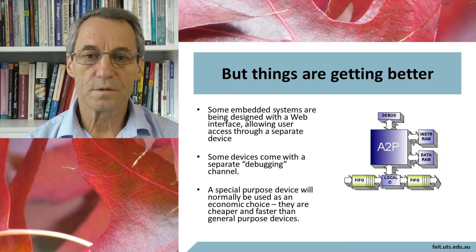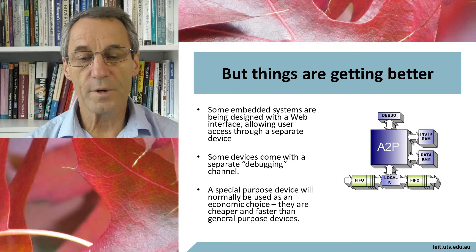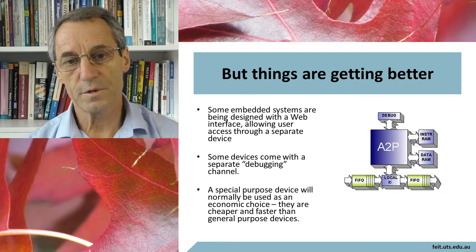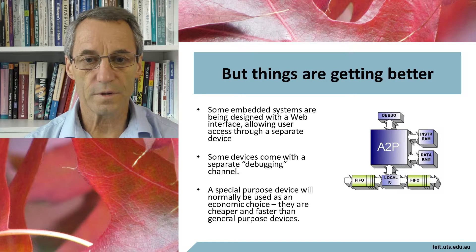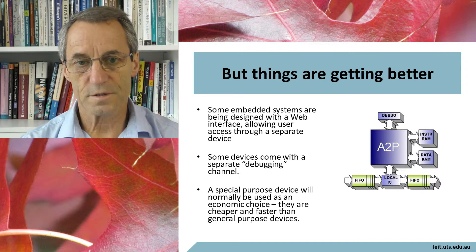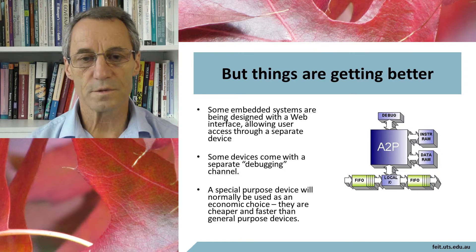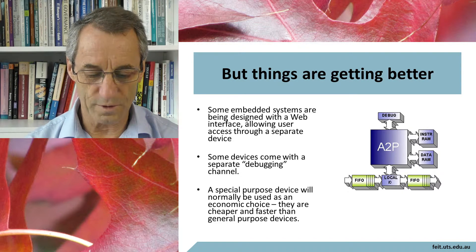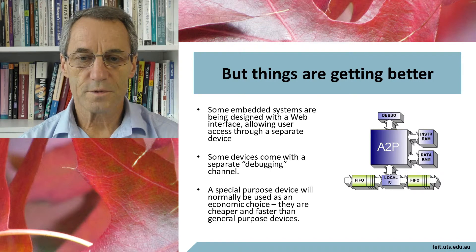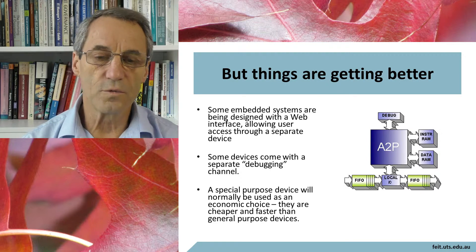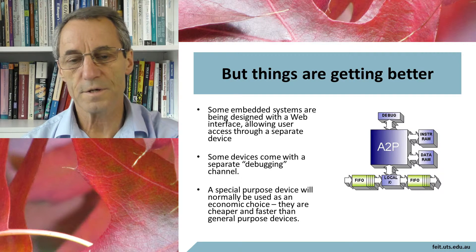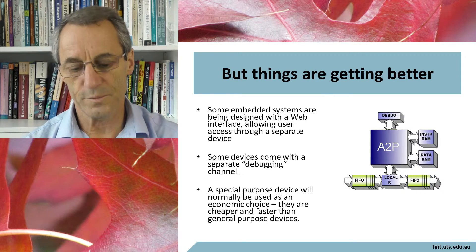Some devices come with a debugging channel. The chip used for the communication protocol had a separate debugging channel into it, so you weren't dealing with anything crude. Special purpose devices will normally be used as an economic choice — they're cheaper and faster than a general purpose device.